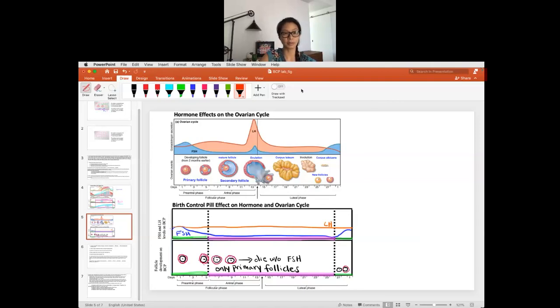So remember, in the normal cycle, what we have is we have FSH going up and then coming down and then going across and then going up again. So FSH is really only up when you're growing the follicles, right? FSH is important for follicle growth.